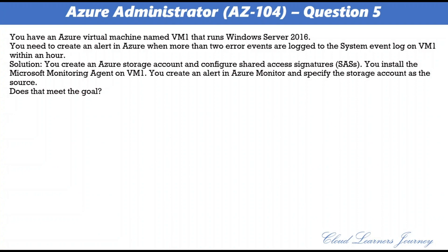Question 5. You have an Azure virtual machine named VM1 running Windows Server 2016. You need to create an alert in Azure when more than two error events are logged to the system event log on VM1 within an hour. The proposed solution is: create an Azure storage account and configure shared access signatures, install the Microsoft Monitoring Agent on VM1, then create an alert in Azure Monitor specifying the storage account as the source. Does this meet the goal? The correct answer is B: No. The correct approach is to create an Azure Log Analytics workspace and configure the data settings, install the Microsoft Monitoring Agent on VM1, and create an alert in Azure Monitor specifying the Log Analytics workspace as the source.